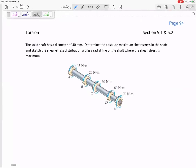We've got a lot of torques here. The shaft is solid, has a diameter of 40 millimeters. Determine the absolute maximum shear stress in the shaft and sketch the shear stress distribution.